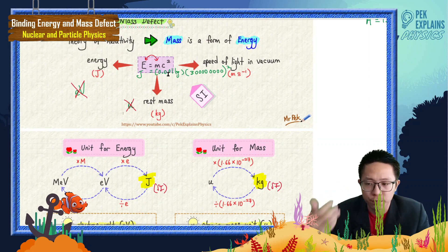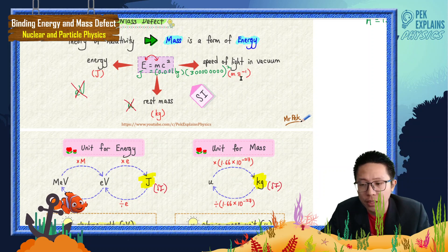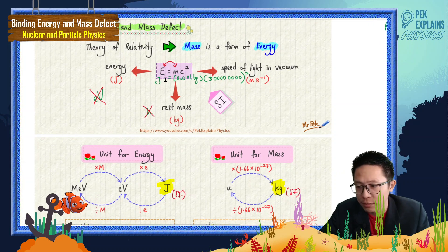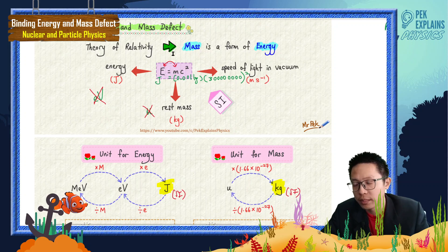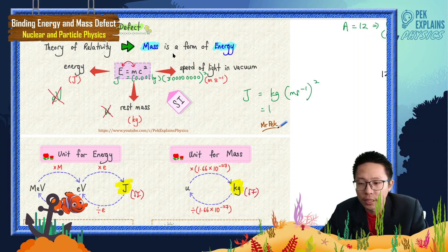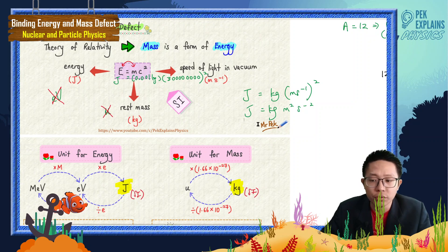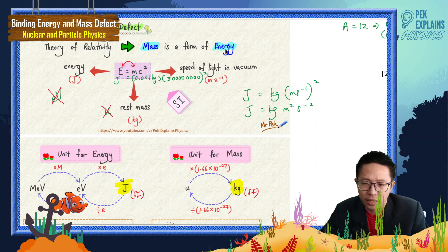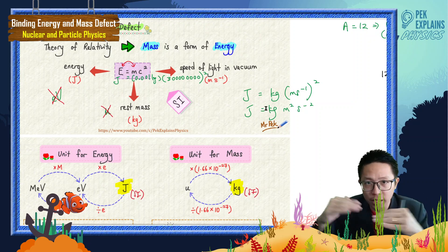Talking about the speed of light, its unit is meter per second, and when squared it becomes meter squared per second squared. If you look at the formula, E in joules, m in kilograms, and c squared in meter squared per second squared — the units all tally with each other, since joule is equivalent to kilogram meter squared per second squared.